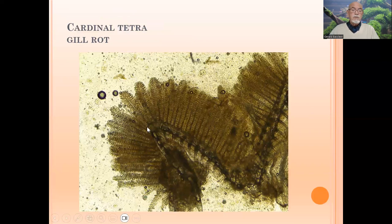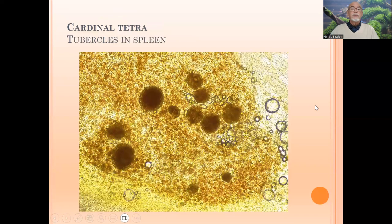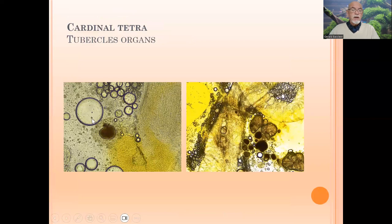Here some parts are damaged, here is another damaged part, and here are some pale parts of the gills — so the gills are not in a healthy condition. Inside the organs we found tubercles here in the spleen, and we found more tubercles next to the intestine, and also here next to the intestine in the mesentery — whole tubercles, a lot of them.